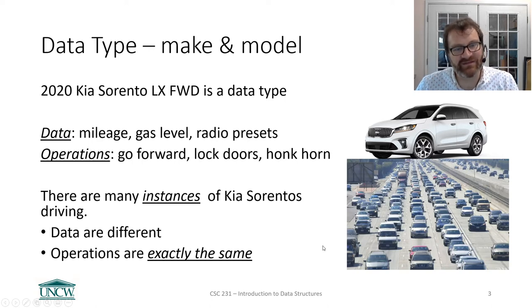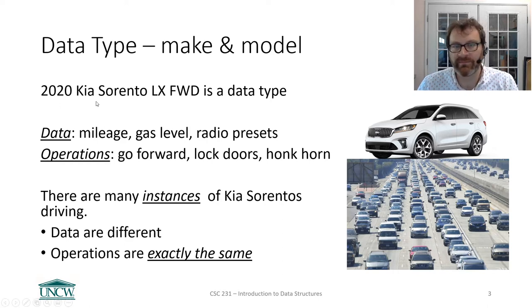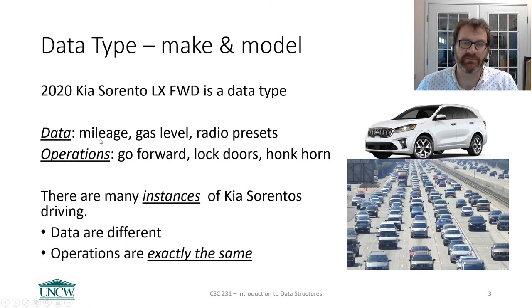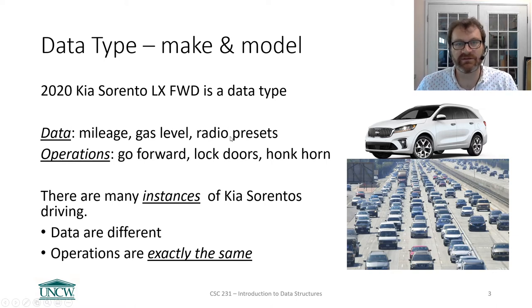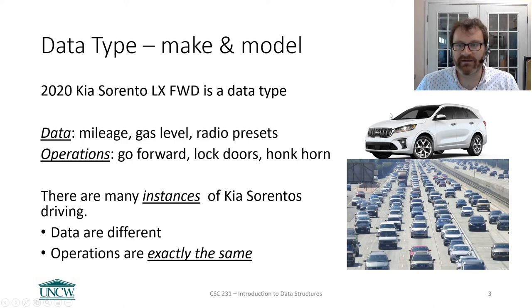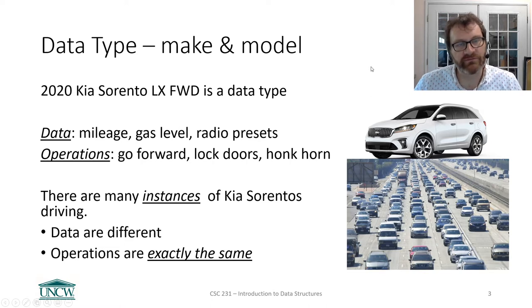There are many instances of Kia Sorentos driving out there right now — all the same type of data, but they're different instances. The data are different. Your odometer has different readings than my odometer. Your gas level is at a different level. Your radio presets are probably different. Your VIN number is definitely different — the unique number that identifies your vehicle. So the data are different, but the operations are all exactly the same. We've got one data type — this kind of car — but there can be many different instances of this car driving around.